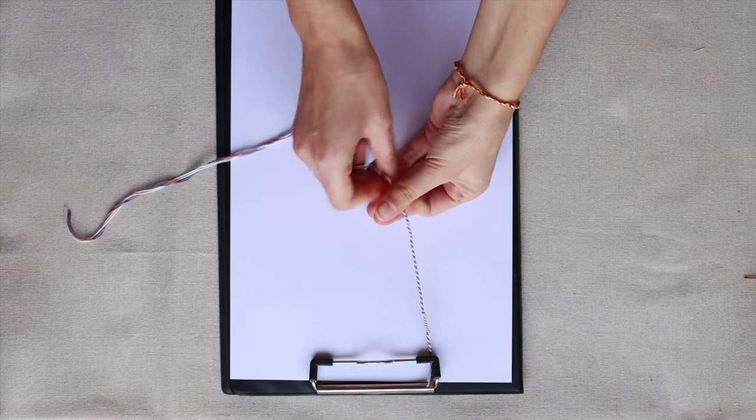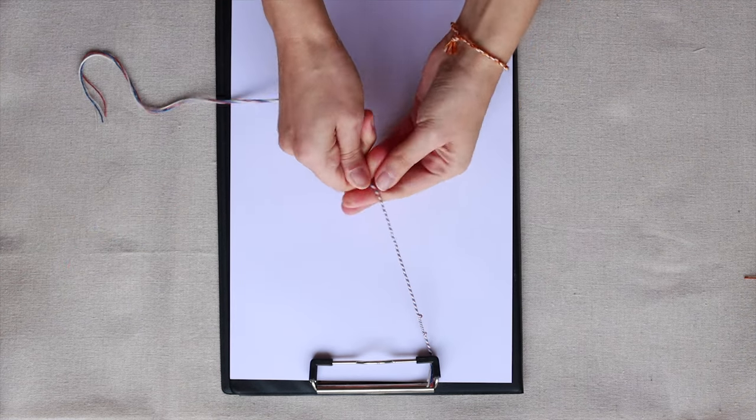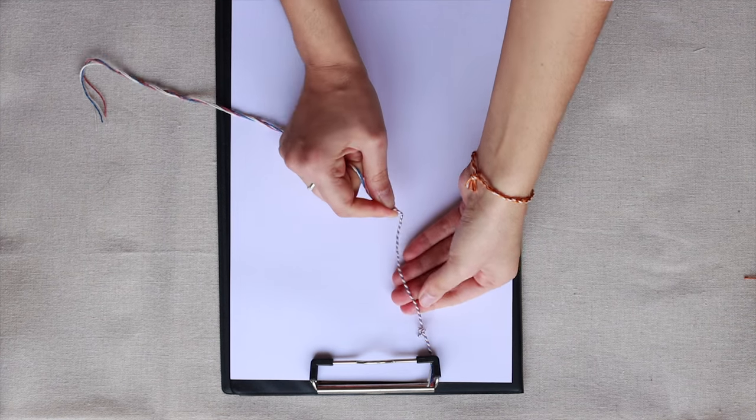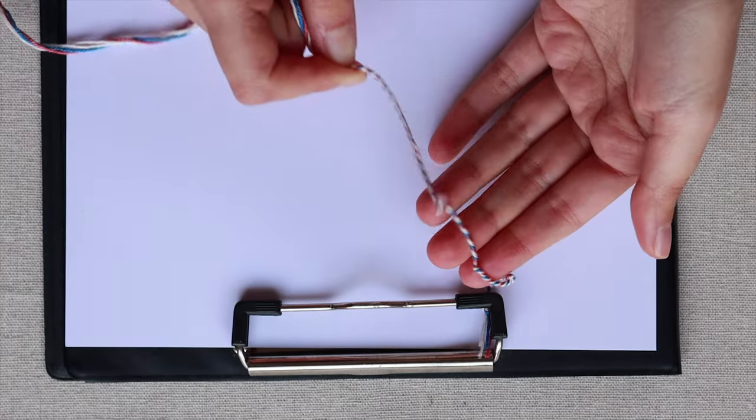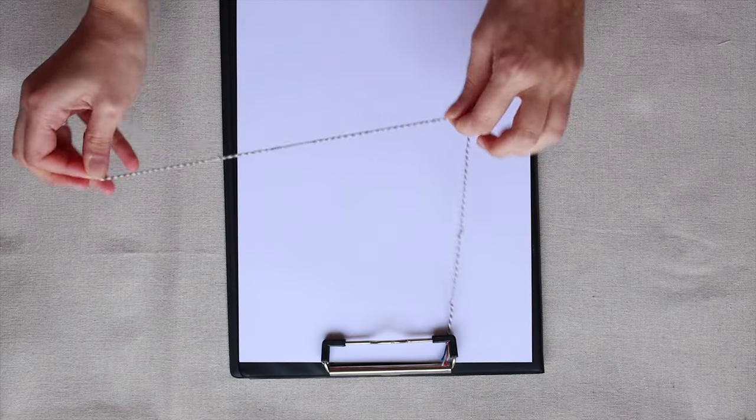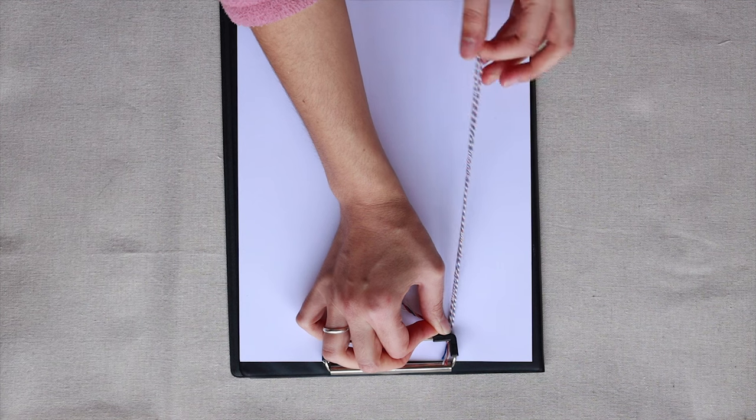Then, just twist the cords, always to the same side, maintaining a bit of tension so they don't twist together. Pull it tightly and join both hands, making a knot to secure.